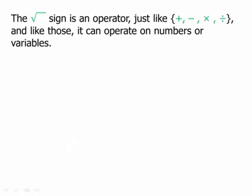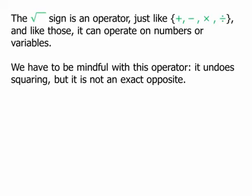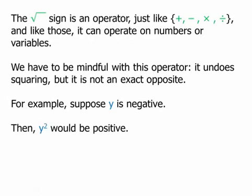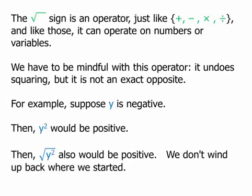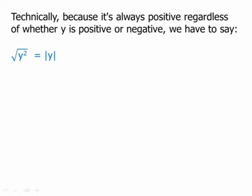The radical sign is an operator, just like addition, subtraction, multiplication, and division signs — it can operate on numbers or variables. We have to be mindful with this operator: it undoes squaring, but it is not an exact opposite. For example, suppose y is negative. Then y squared would be positive, and the square root of y squared would also be positive — we don't wind up with the original negative number. Because the output is always positive regardless of whether y is positive or negative, we have to say that the square root of y squared equals the absolute value of y.